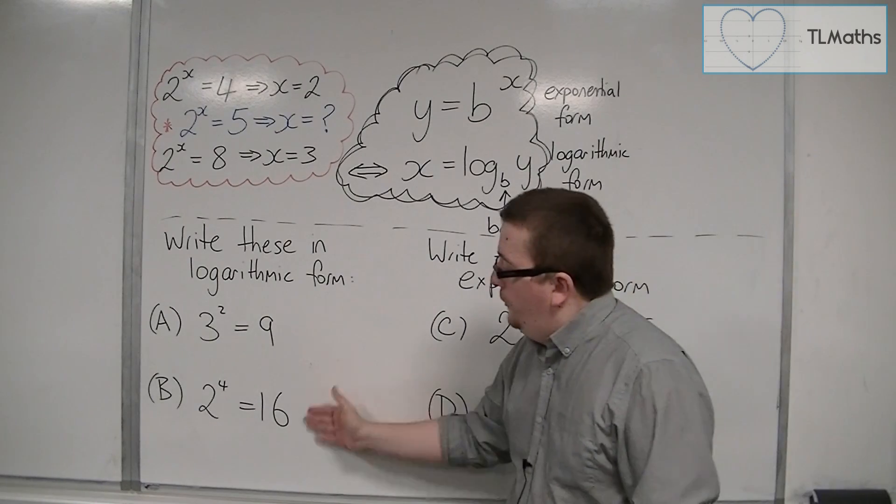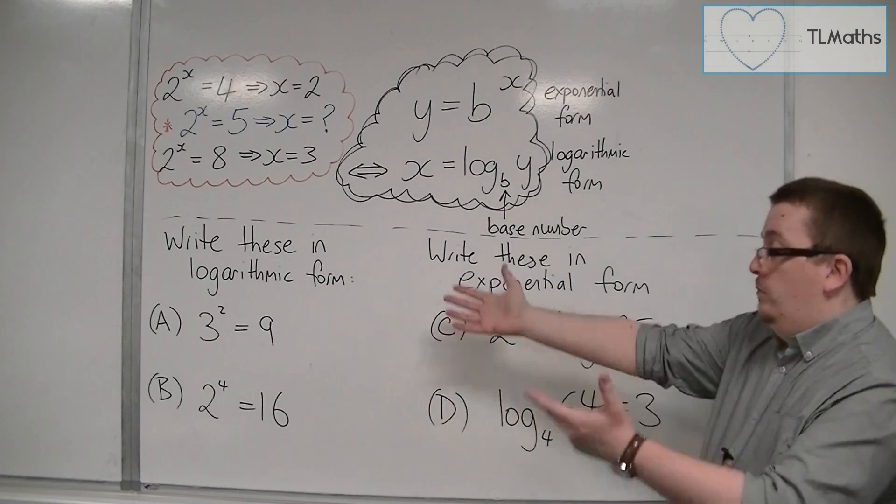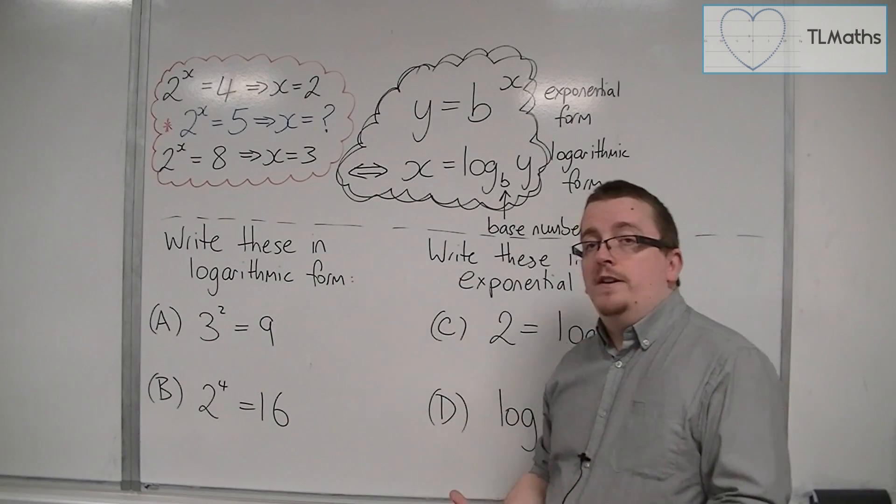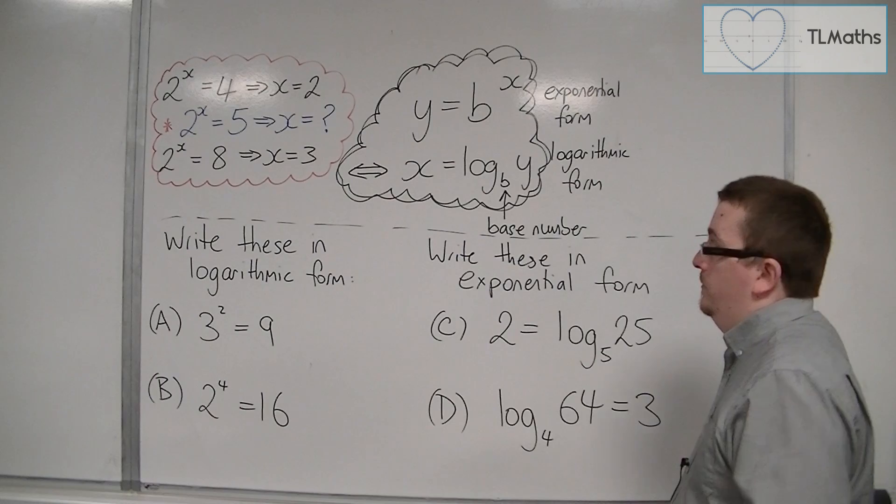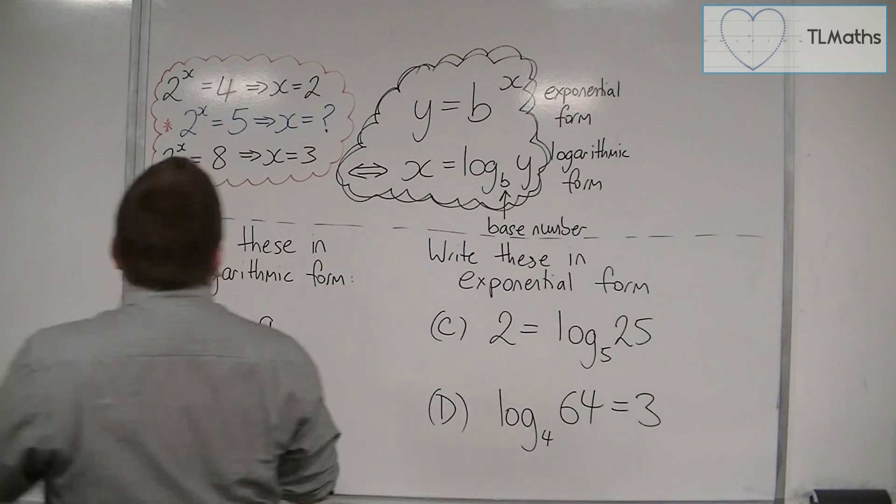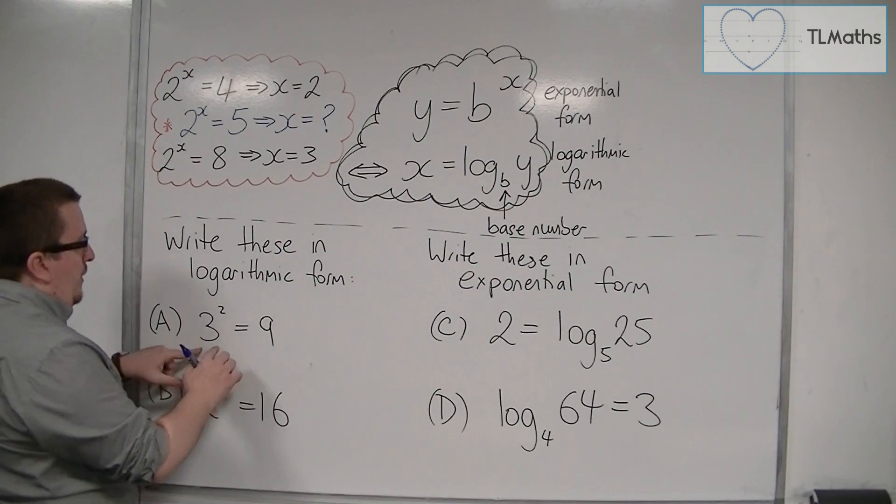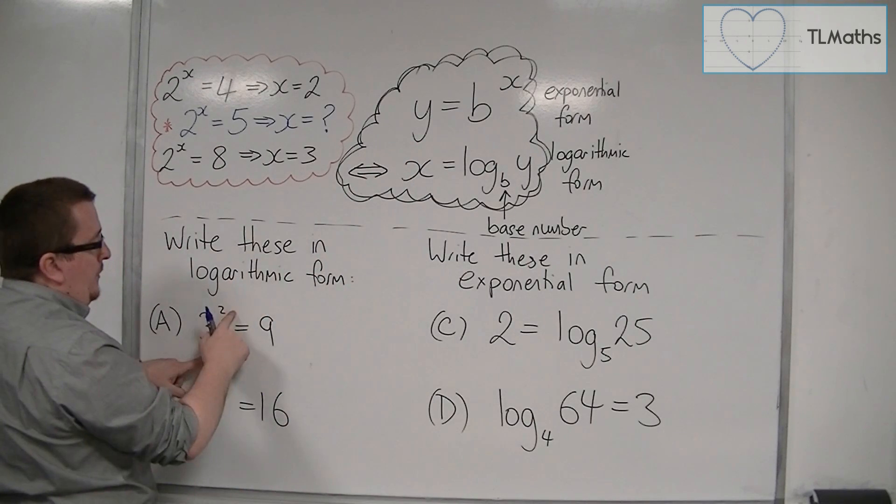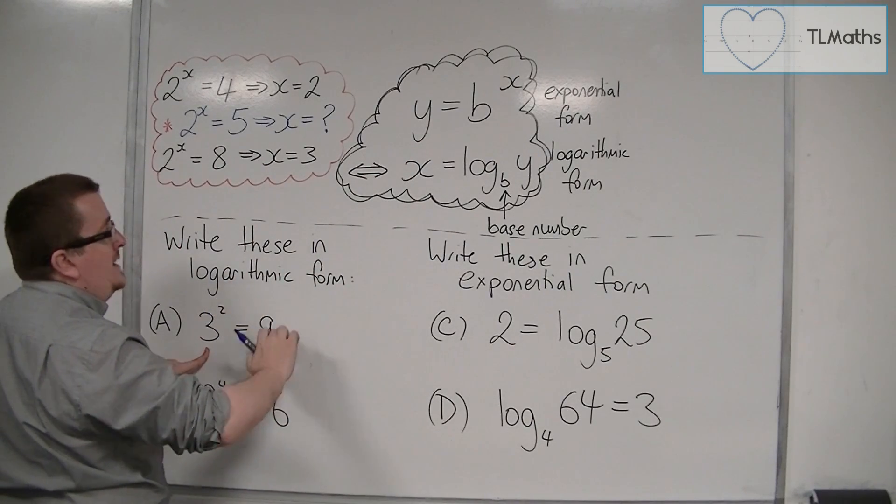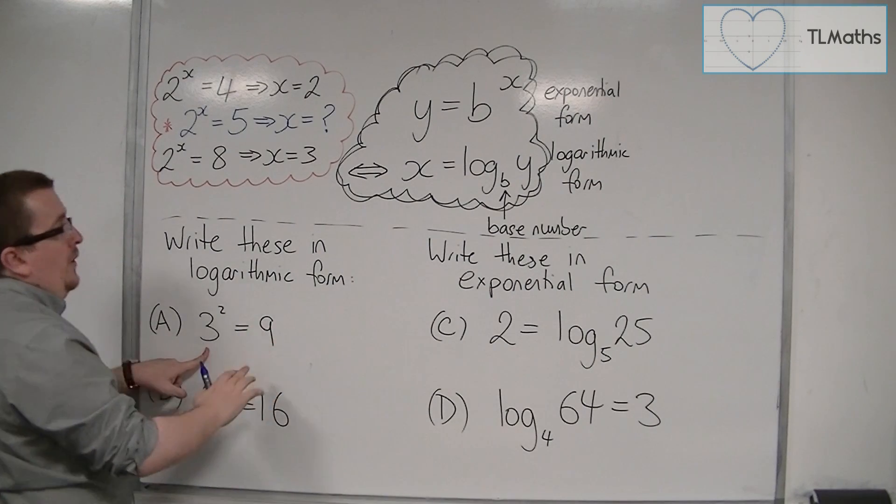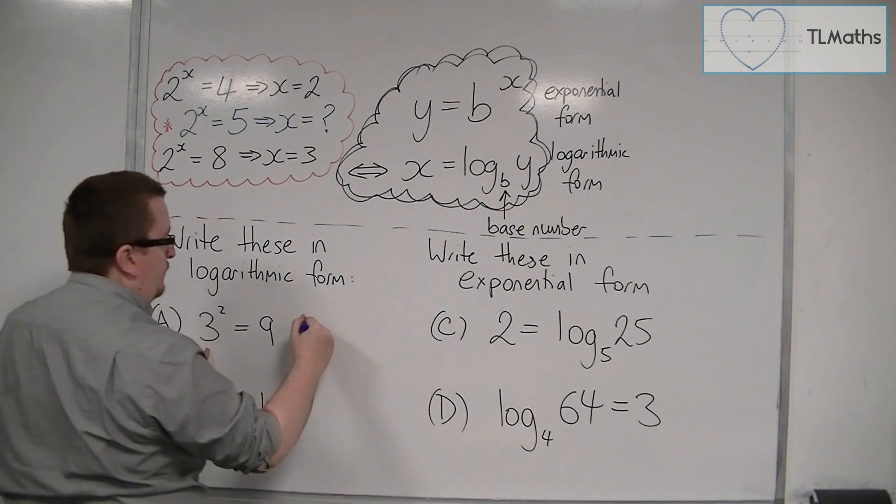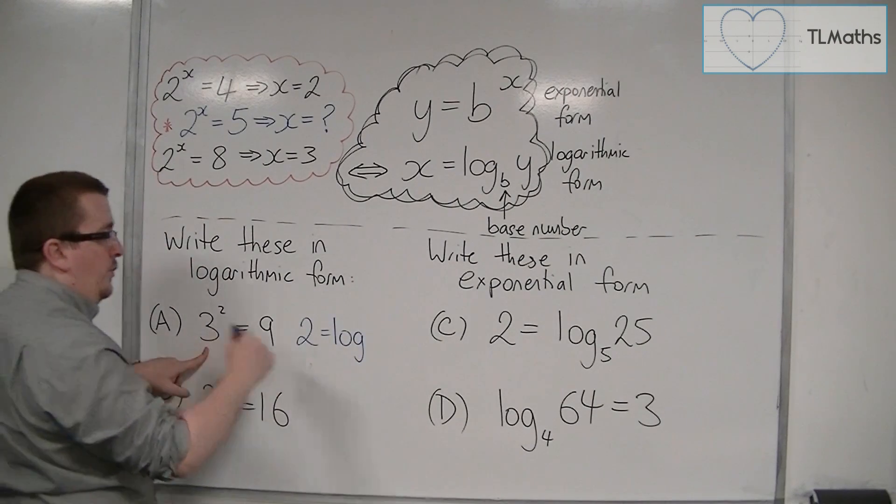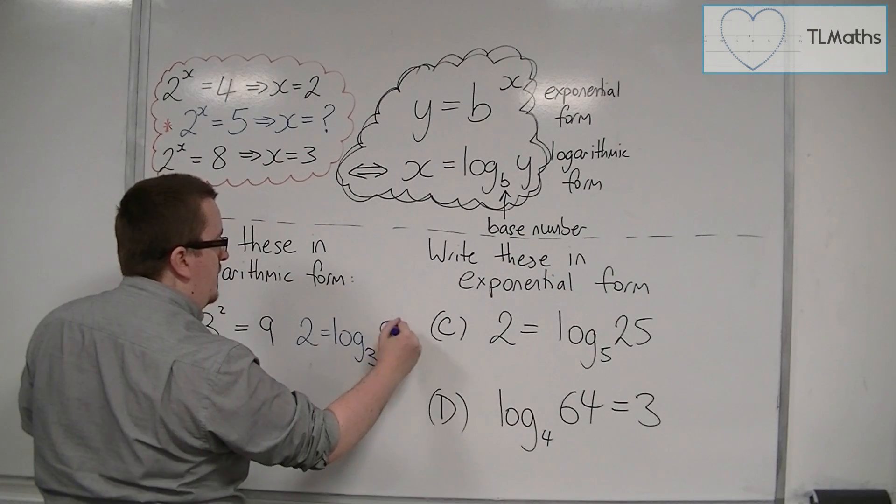So here are two equations that are in exponential form, and I want to be able to write them in logarithmic form. So what we're looking at here is that the 3 is the base number, 2 is the x, and the y is 9. So x, which is the 2, is equal to log base 3 of 9.